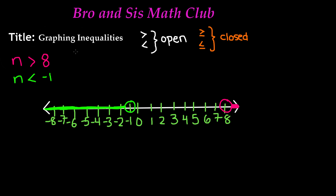Now our third example: let's say we have n is greater than or equal to the number 4. We know that greater than or equal to is going to be a closed circle. Our number is 4, so draw a closed circle on 4 — that means we're going to shade in the circle. Then look at the point: it's going to the right, so we're going to shade everything off to the right. That means the value of n could be anything greater than, or it could be the number 4 itself.